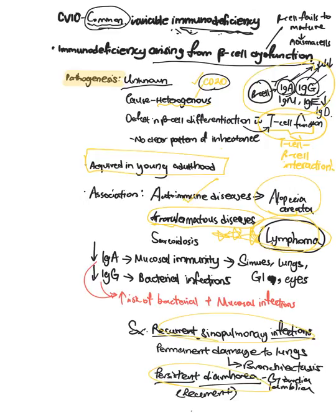The decrease in IgA as well as IgG is important because they provide mucosal as well as bacterial immunity. Therefore this group of patients are at higher risk of bacterial and mucosal infections. Symptoms-wise, they have recurrent sinopulmonary infections, permanent damage to the lungs that could lead to bronchiectasis, which is a permanent dilation of the airways.